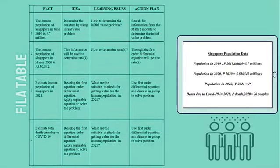This is the FILA table for human population of Singapore. The upper-right Singapore population data shows that the population in 2019 was 5.7 million, while the population in 2020 is 5.85 million.